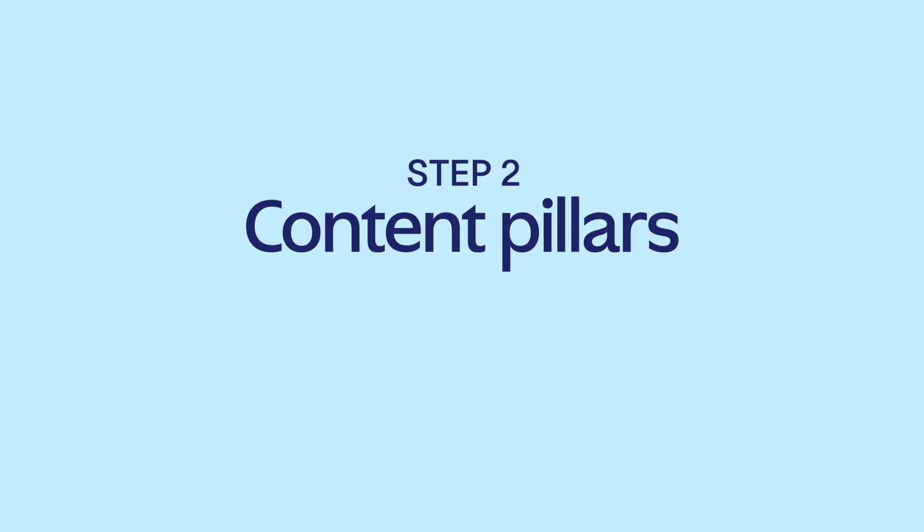Let's talk about content pillars — basically the three to five themes that your brand should own when it comes to content. You're going to want to aim for three to five. If you get fewer than three, you're probably being a bit too narrow; you're going to want a bit of variety. Look at your brain dump, group similar ideas, and look for patterns — like this is where we tell product stories, or this is how we feature our community, or this is where we get to be fun and trendy.